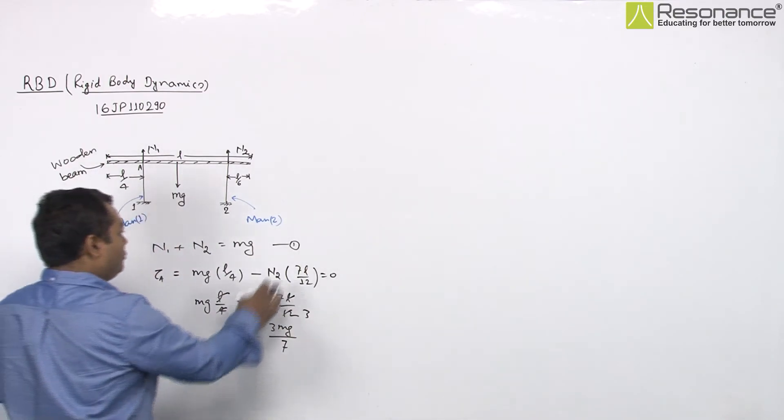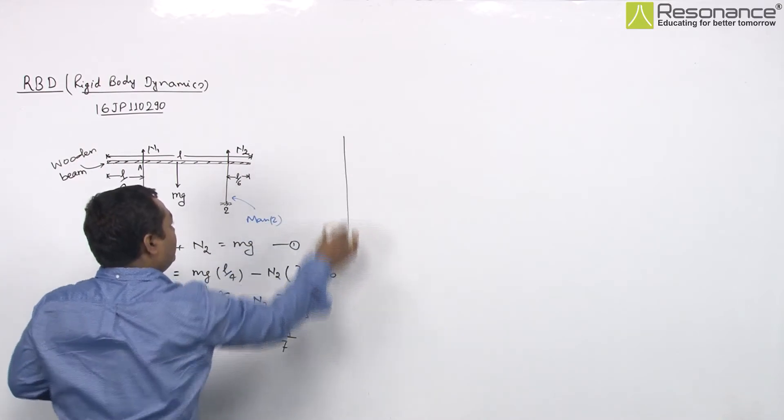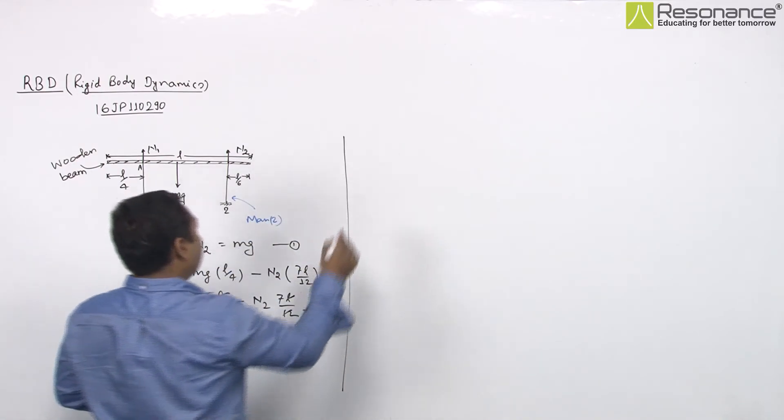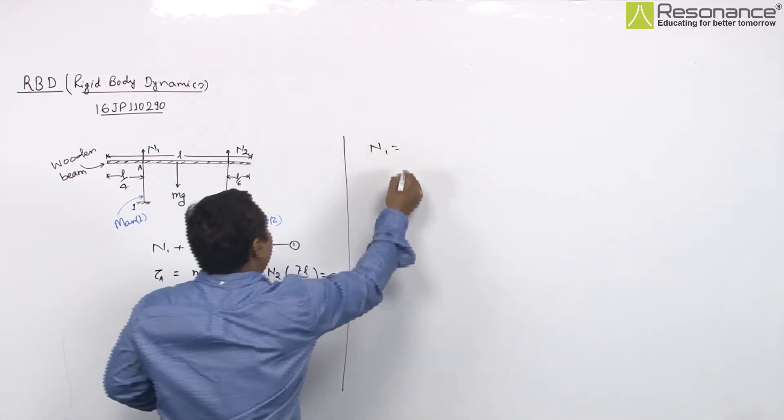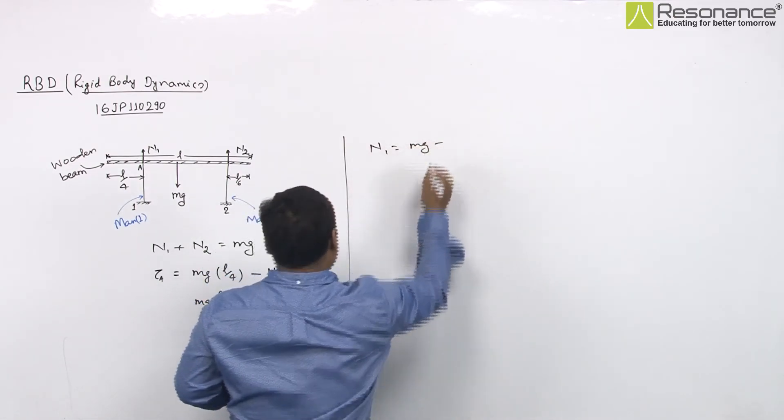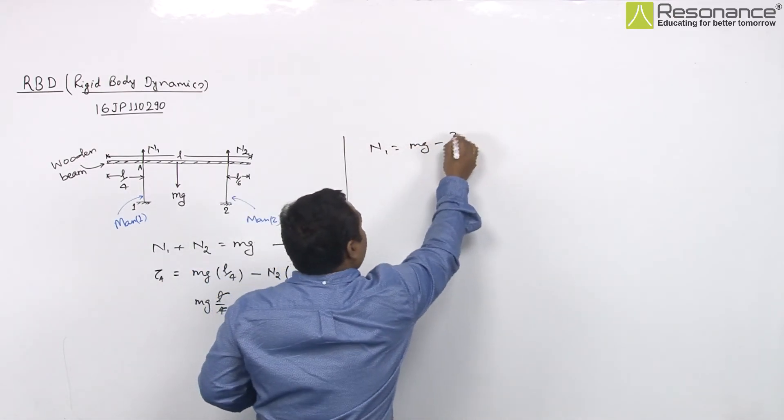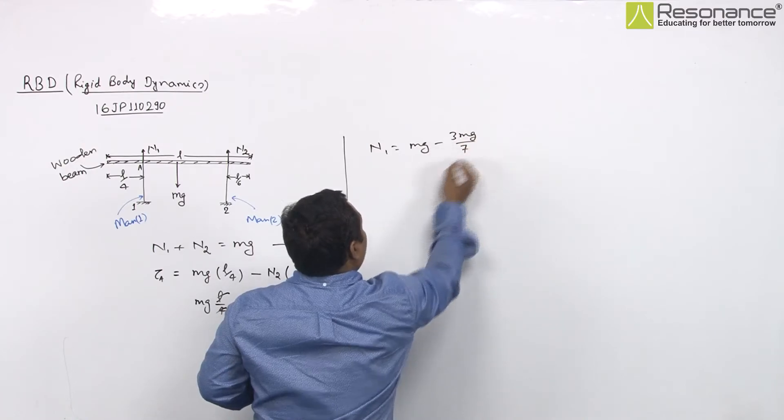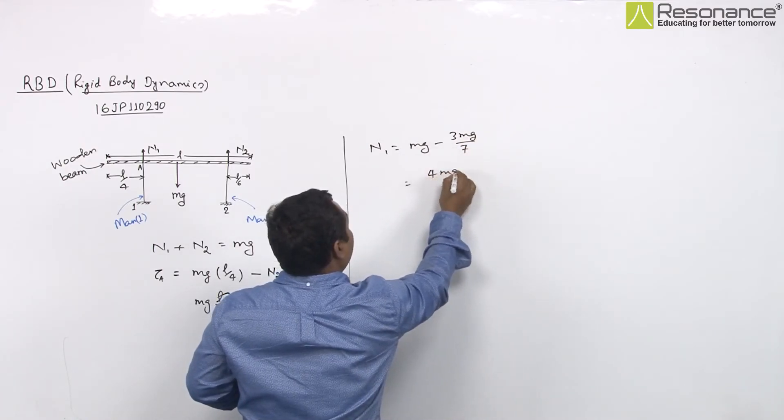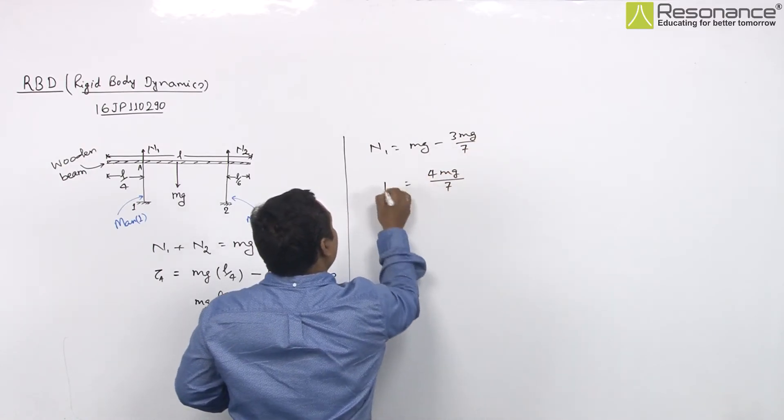By putting this value in the equation we get N1 which will be Mg minus N2, which is 3Mg/7. By solving this we get 4Mg/7.